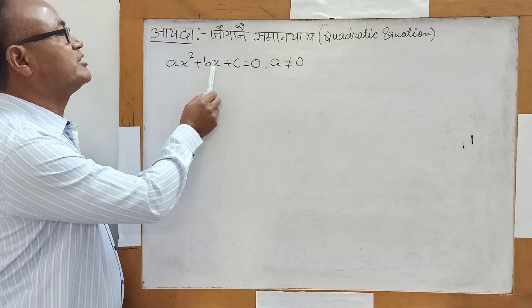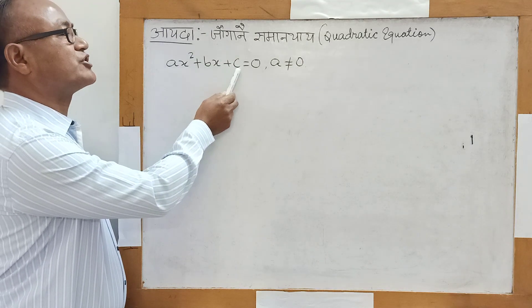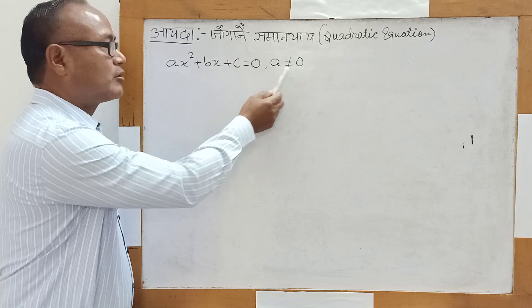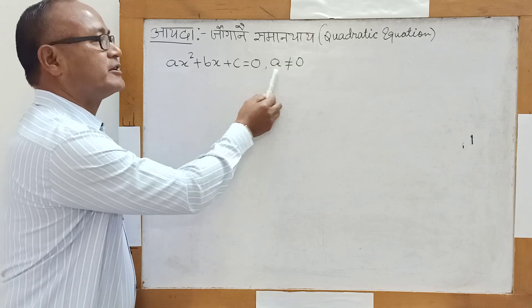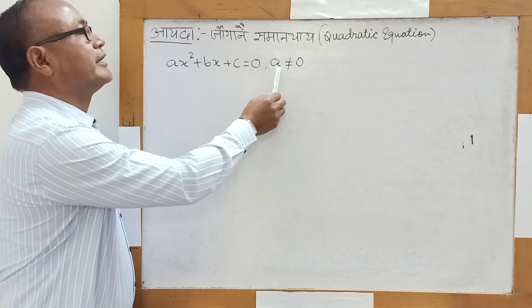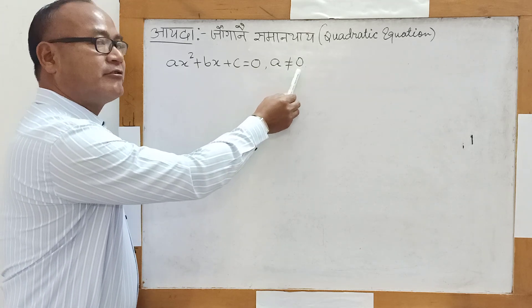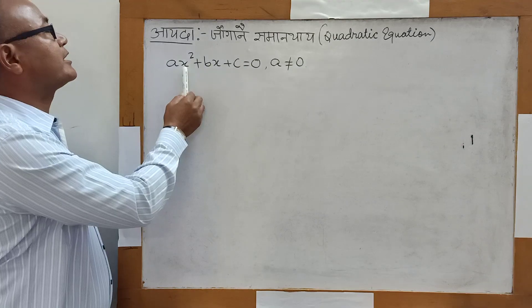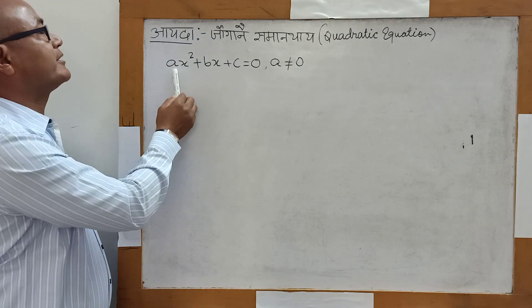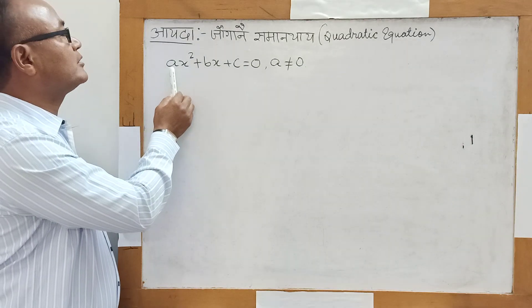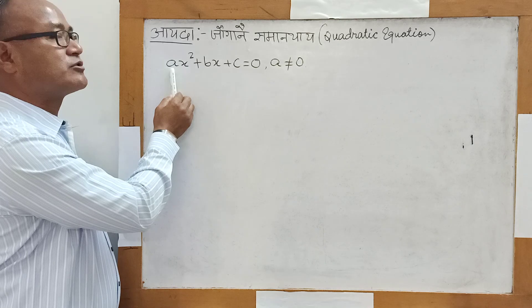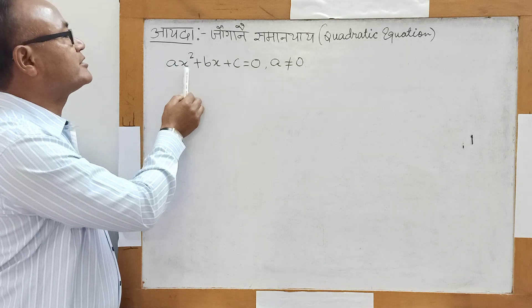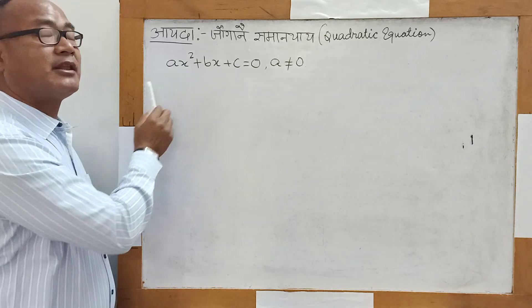We have ax squared plus bx plus c equal to 0, meaning a is not equal to 0. Where a is not equal to 0, we need to find the solution.